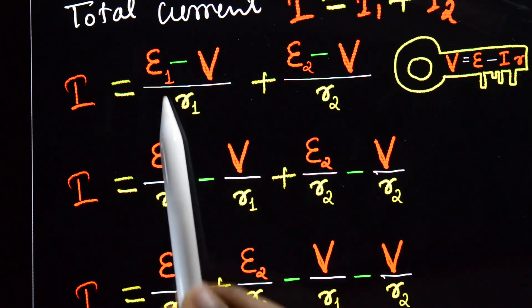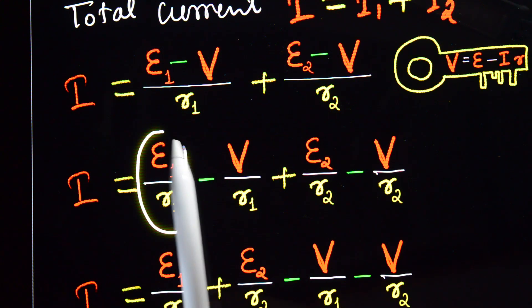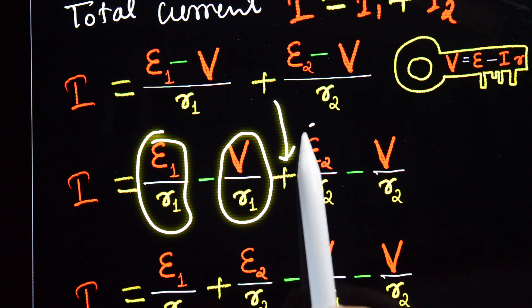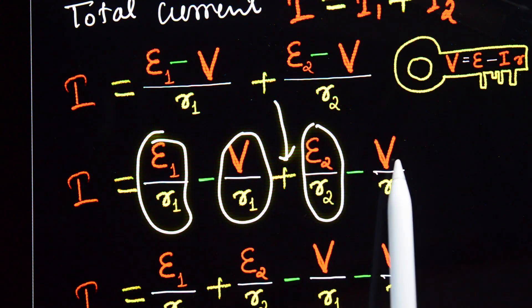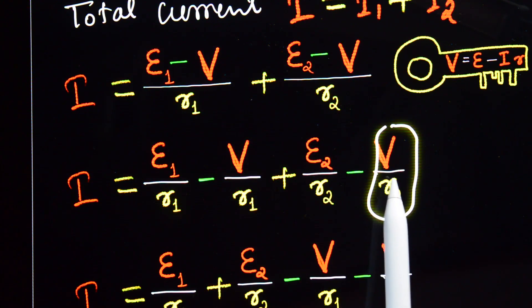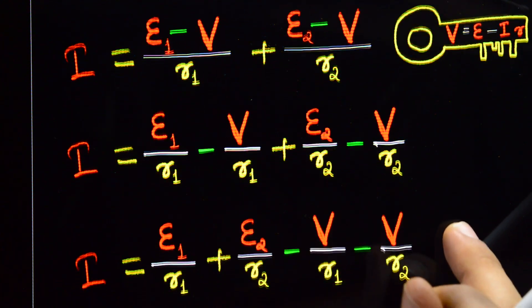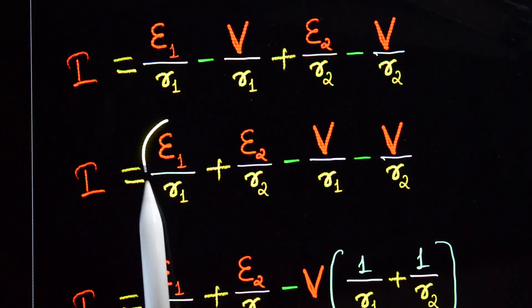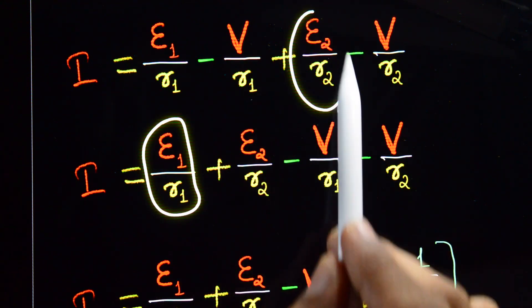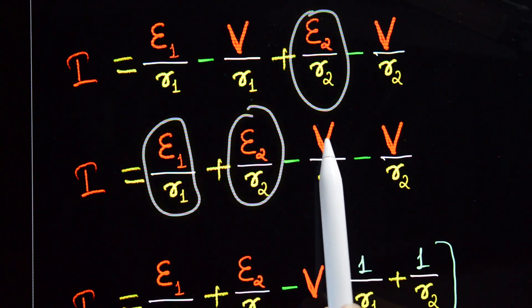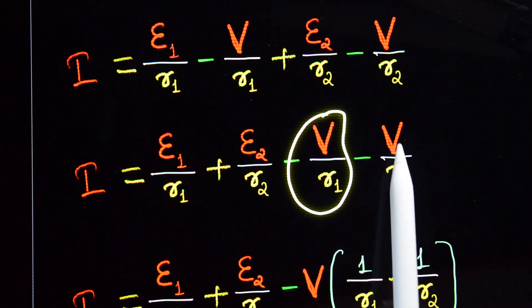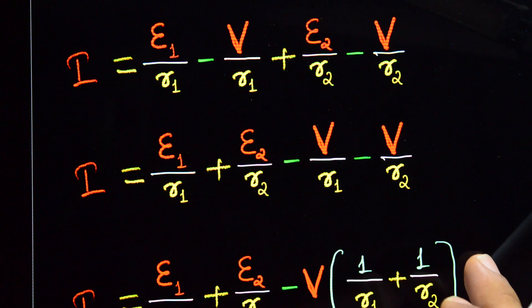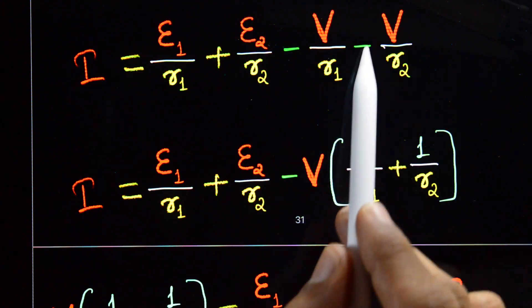Expanding: i = e1/r1 - v/r1 + e2/r2 - v/r2. Grouping terms: i = e1/r1 + e2/r2 - v/r1 - v/r2. Taking -v as common: i = e1/r1 + e2/r2 - v·(1/r1 + 1/r2).